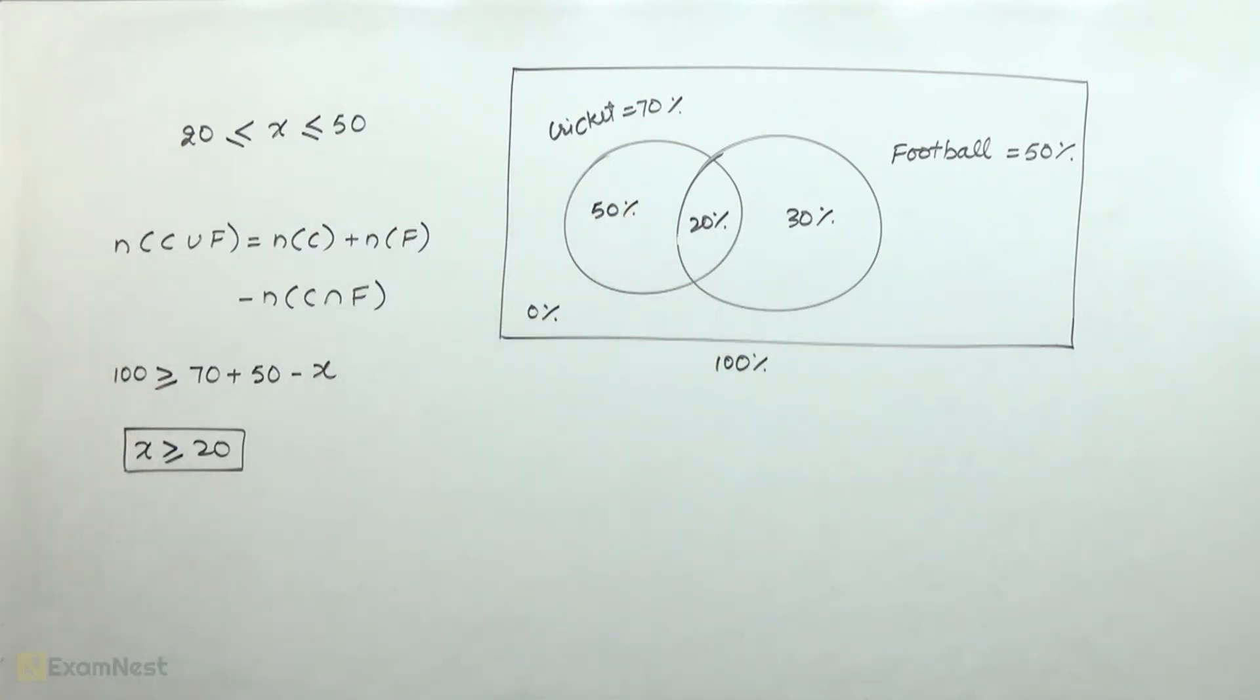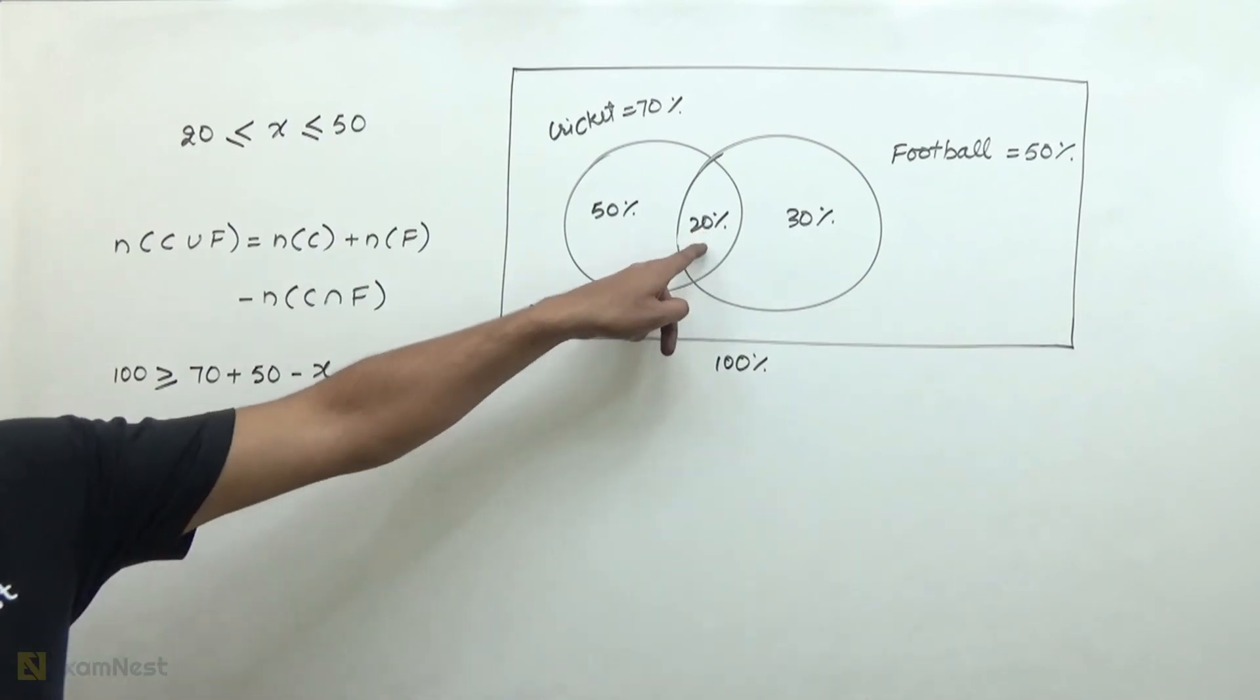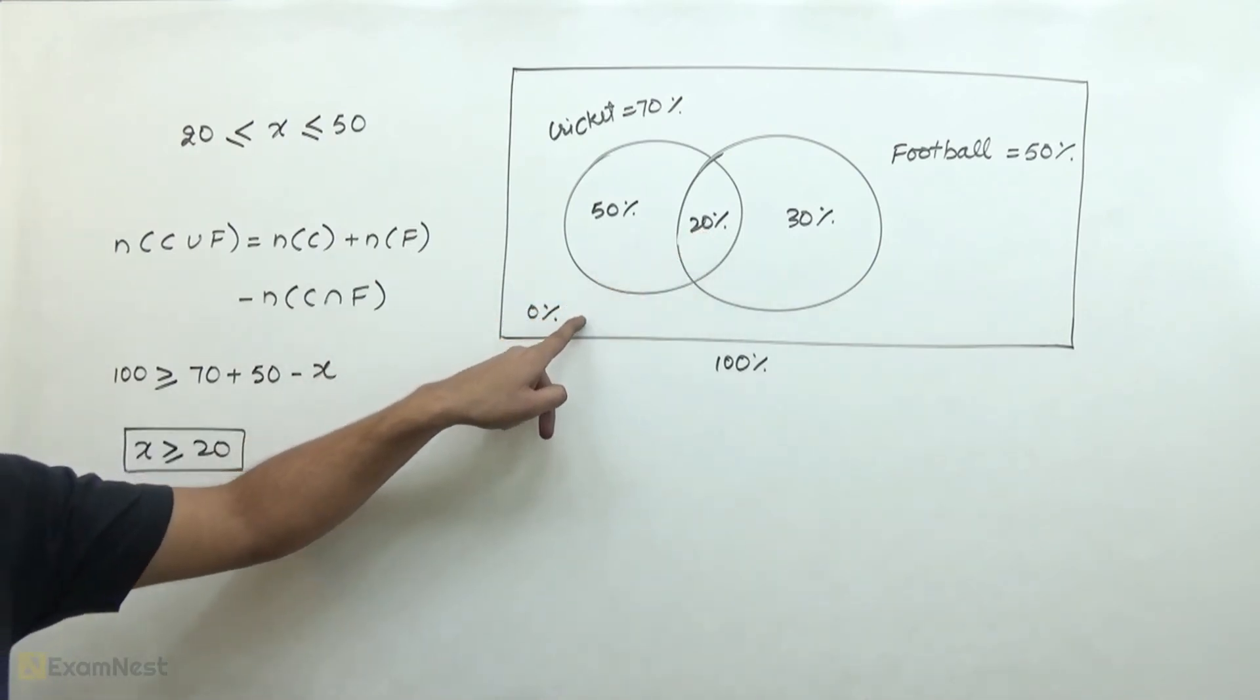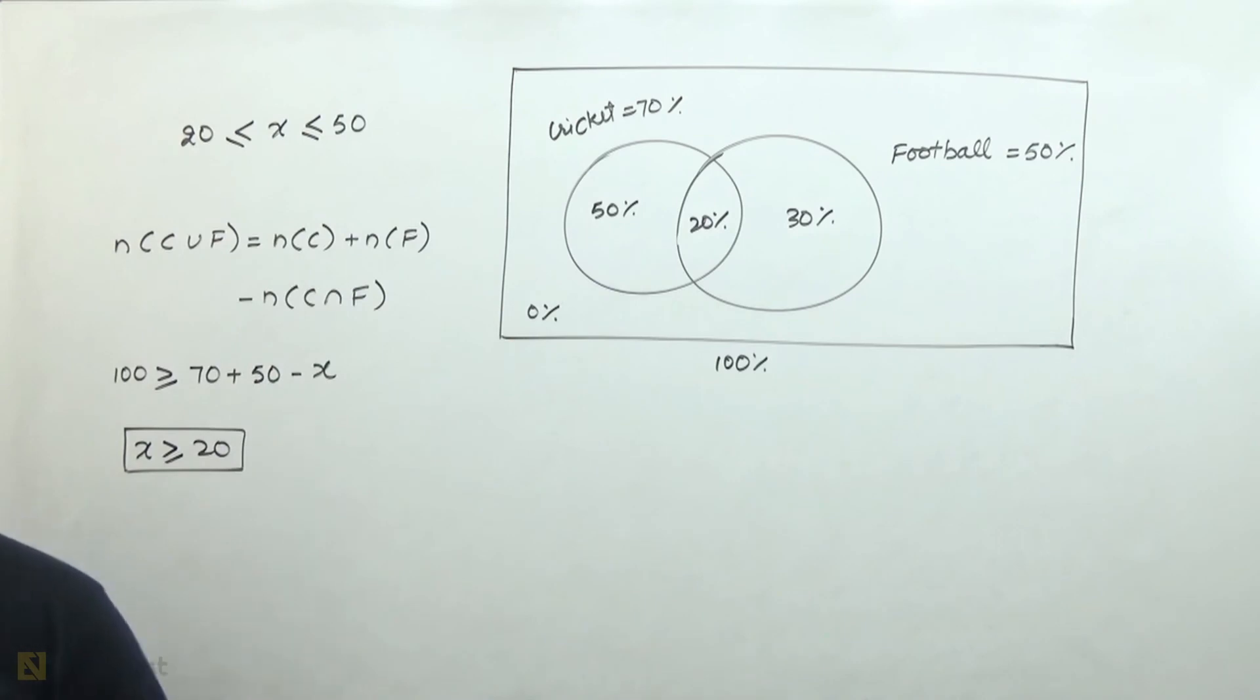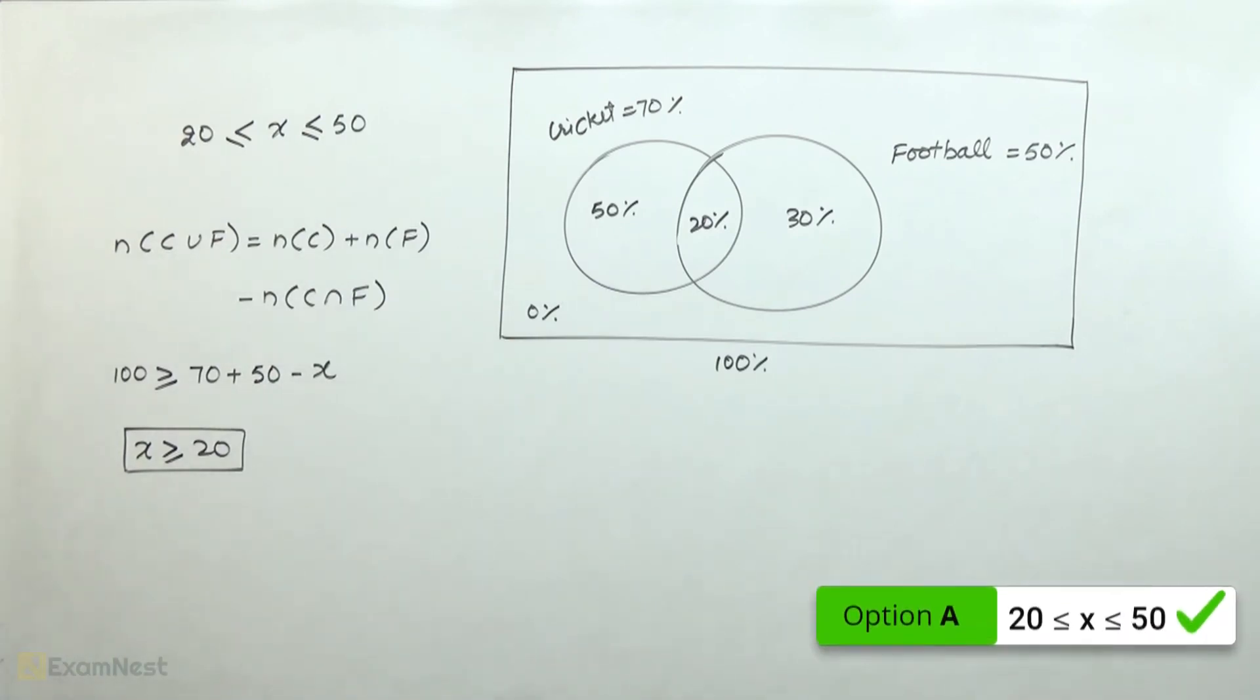Now, if we have less than 20, then this value will be negative, which is not permissible. So our first option is the answer to this question.